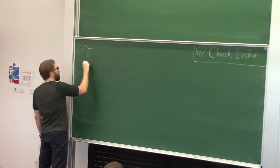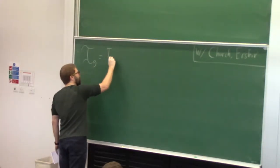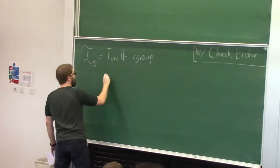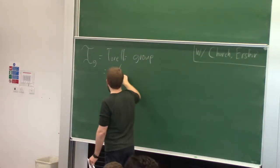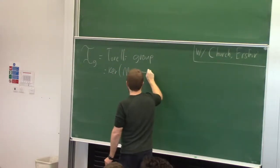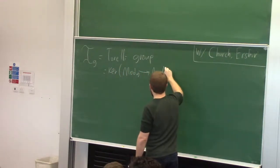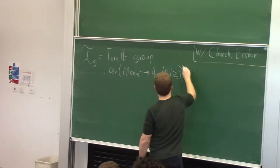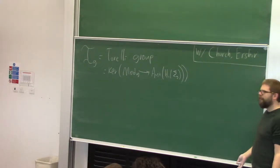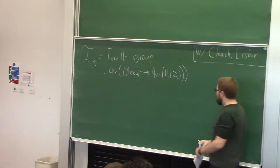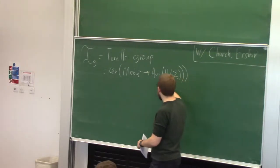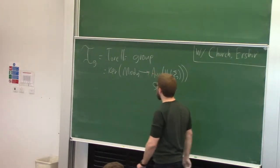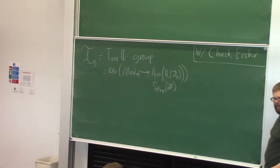This is the Torelli group, which I'm going to denote by I_g. What is that? It is the kernel of the mapping class group mapping to the automorphism group of H_1 of the surface. Now, what is the automorphism group of H_1 of the surface? Well, this is Z to the 2g, but it preserves the algebraic intersection form, so that really is Sp_{2g}(Z). This is a wonderful group — one of my favorite groups in math.